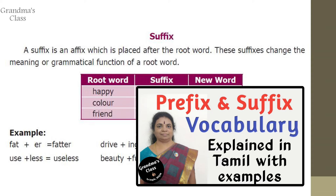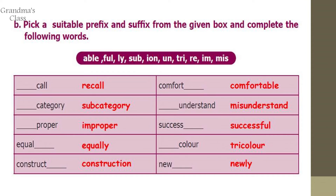We have already done a separate video on prefix and suffix; the link is given in the description box. Next exercise B: pick a suitable prefix and suffix from the given box and complete the following words. The first word is 'recall'. 'Subcategory'. 'Improper'. 'Equally'. 'Construction'. 'Comfortable'. 'Misunderstand'. 'Successful'.